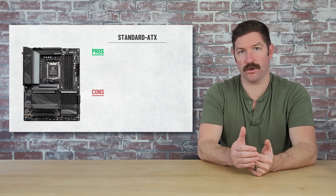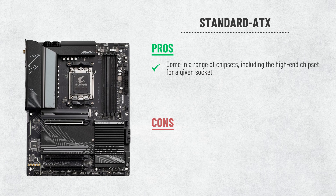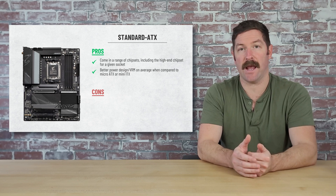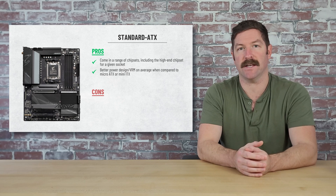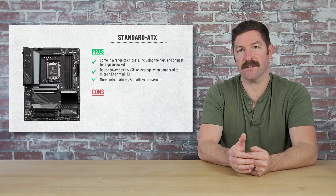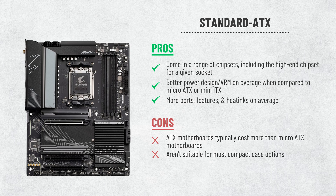Unlike extended ATX motherboards, which almost always come with the best chipset available for a given socket, standard ATX motherboards can vary quite a bit in quality because they come in a range of chipsets. However, when compared to micro ATX and mini-ITX motherboards, standard ATX boards typically come with better power designs overall, meaning they are usually better suited to handle more power-hungry CPUs and are better for overclocking. Standard ATX motherboards also offer more ports and features, mainly because of their larger size and the better chipsets they typically come with. The downsides are that they typically cost more than micro ATX motherboards and won't fit in most compact case options, making them less viable for budget builds or small form factor builds.